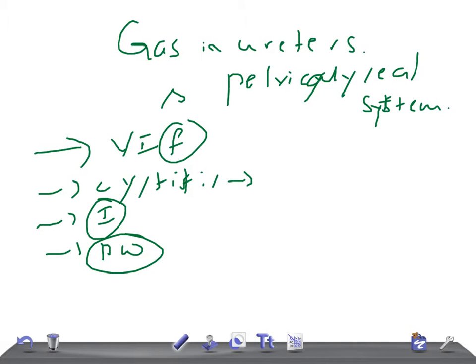These can give rise to gas in the bladder, and that gas can go and get stuck in the ureters. So some other causes can be ureteric diversion.